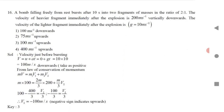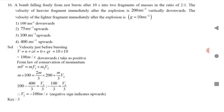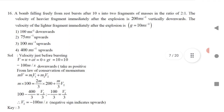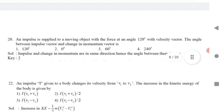Question 12: A bomb falling freely from rest bursts after 10 seconds into two fragments in ratio 2:1. The velocity of the heavier fragment immediately after the explosion is 200 m/s vertically downward. First find v using v = u + at to get the velocity just before explosion. Then apply conservation of linear momentum: mv = m₁v₁ + m₂v₂ to solve for v₂.